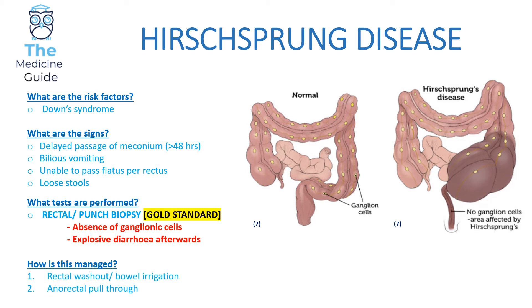In terms of management for Hirschsprung disease, it's important to know the correct order. Initially, you perform a rectal washout or bowel irrigation, and then afterwards you perform an anorectal pull-through. The order of management is something that can easily come up in exams, so remember: rectal washout first, then anorectal pull-through.